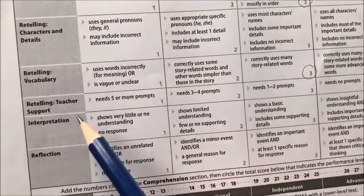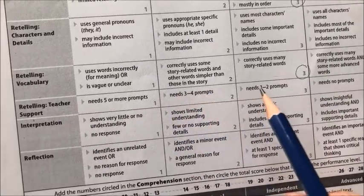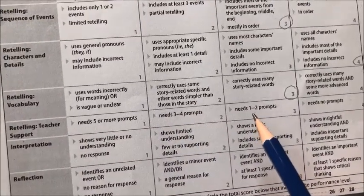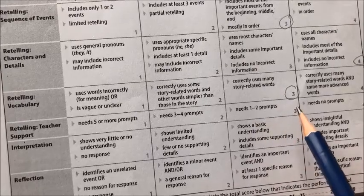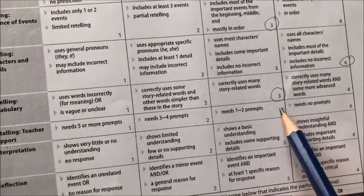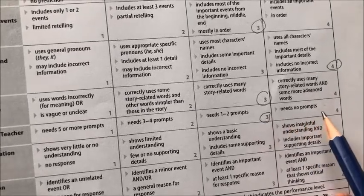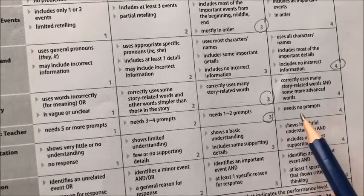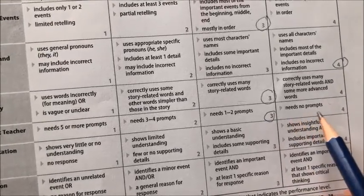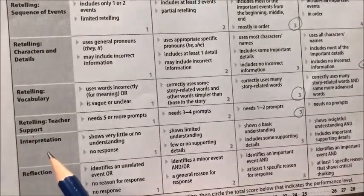For retelling teacher support, the student needed one prompt, so we're going to circle the independent level here, because she did need some prompts, and a level four would indicate she needed no prompts.